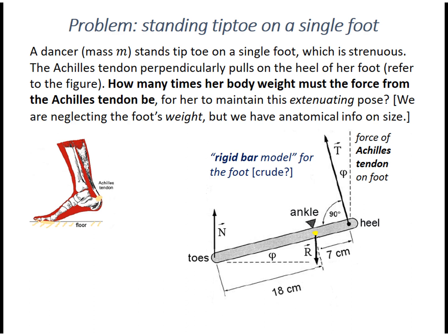We have the following forces acting on the foot. The force of the Achilles tendon on the foot, T, perpendicular to the bar. The normal force of the floor, vertical, straight up.